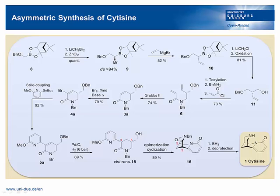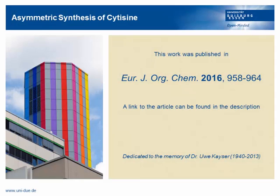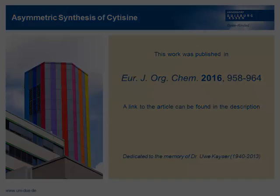Finally, two key features of this synthesis should be highlighted. Firstly, the use of the relative late-stage precursor A, which contains only those carbons which later constitute the C-ring of cytisine, here again marked in blue. Secondly, the use of 1-carbon homologations to build up the critical chiral moiety early in the synthesis.